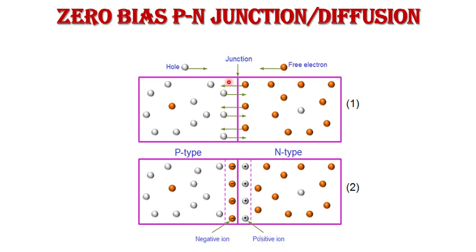Now, what is zero bias p-n junction? Zero bias means when we do not apply any external field or external force to the p-n junction — this is called unbiased or zero bias p-n junction. When p-type and n-type semiconductors are joined, one side of the junction has a high concentration of holes (p-type) and the other side has a high concentration of electrons (n-type). Due to this concentration gradient across the junction, the process of diffusion of charge carriers takes place.